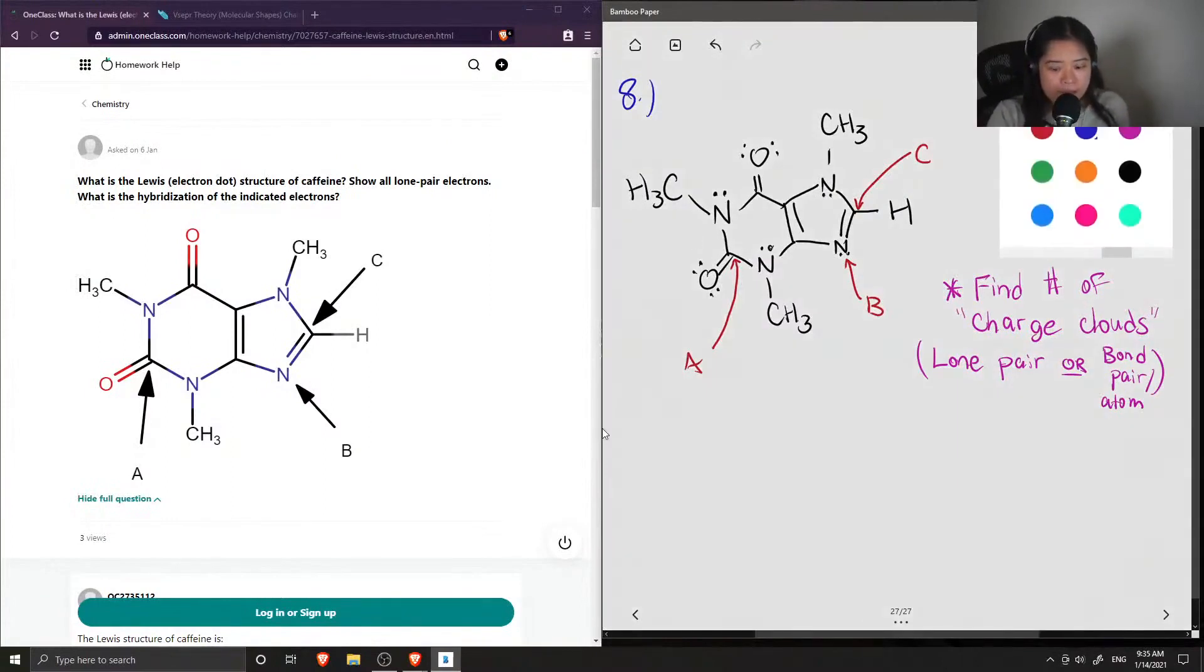And after you count out how many charged clouds you have, this will help you when you find out your hybridization. So we have sp3 hybridization when we have four charged clouds. We have sp2 when there are three, and we have sp when we only have two.